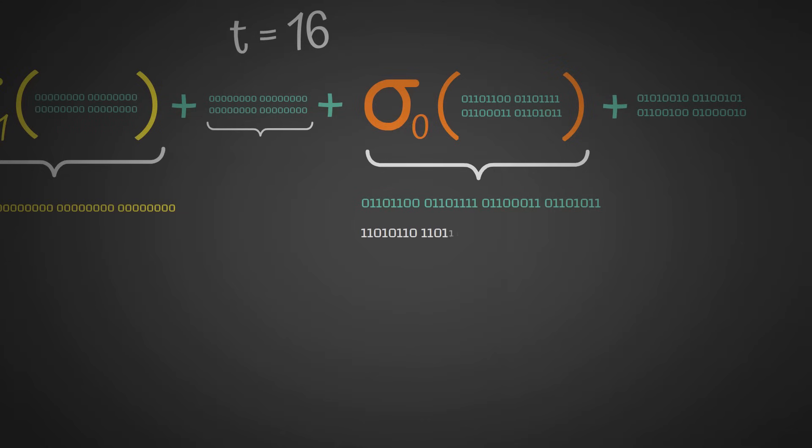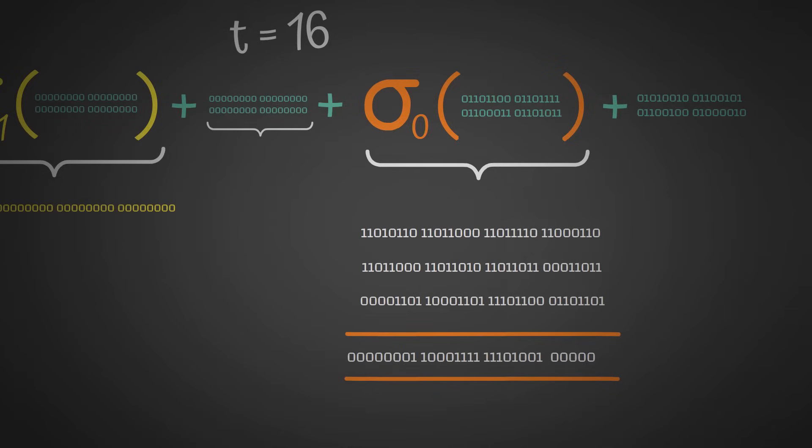Then we have sigma 0 of something that's not all 0s, which is more interesting. We take a right rotation of 7, a right rotation of 18, and a right shift of 3, and we have these three numbers. Then we do bitwise addition modulo 2, and this is our final output.